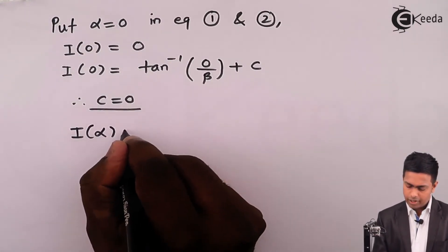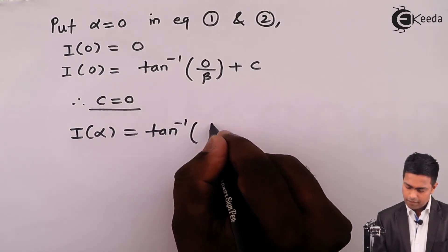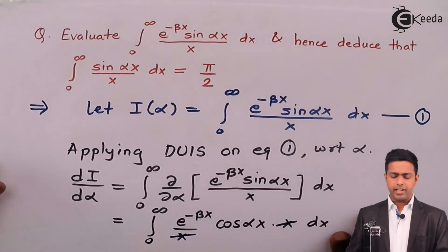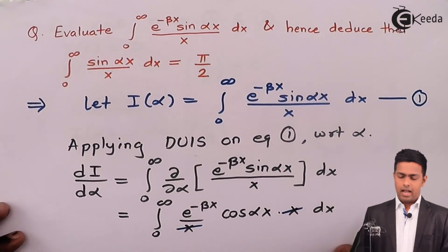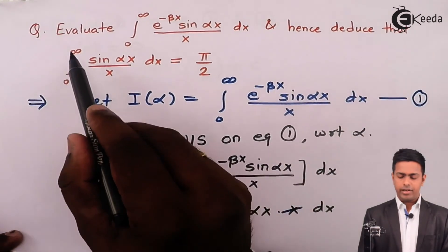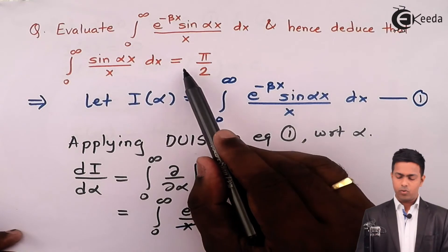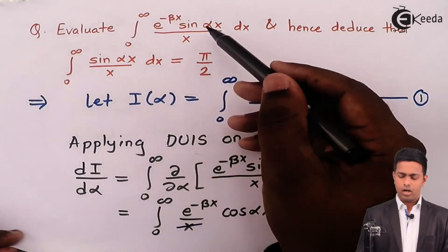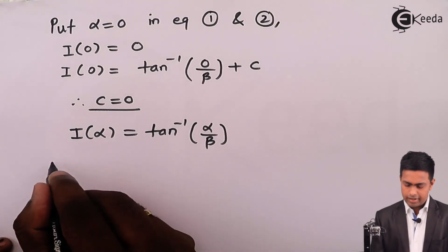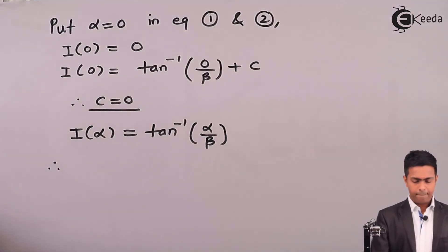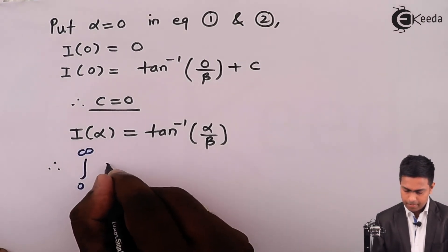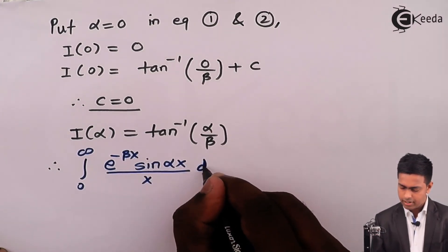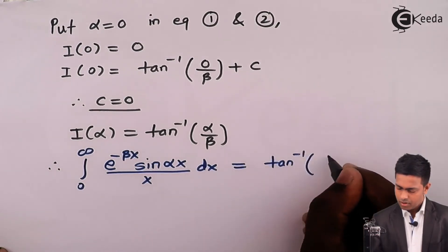Substituting c = 0 into equation number two, the value of I of alpha is tan inverse of alpha by beta. So I(alpha) = tan inverse(alpha/beta). We have now evaluated the integral using DUIS. For the deduction, we want to show that integration from 0 to infinity of sin(alpha x) upon x dx equals pi by 2. We rewrite the result: integration from 0 to infinity of e raised to minus beta x times sin(alpha x) upon x dx equals tan inverse of alpha by beta.